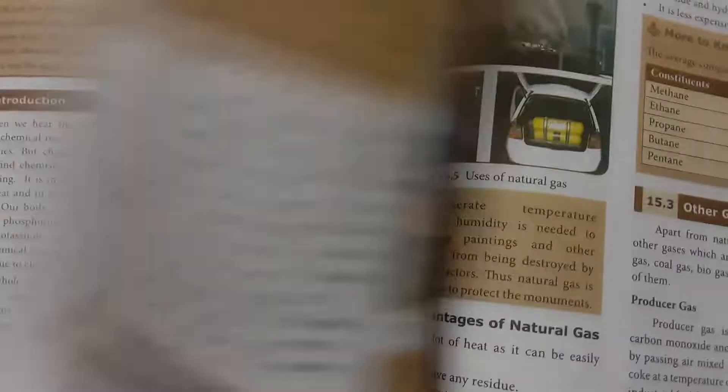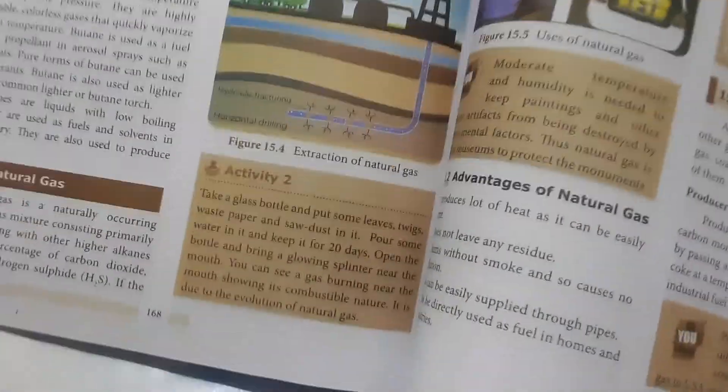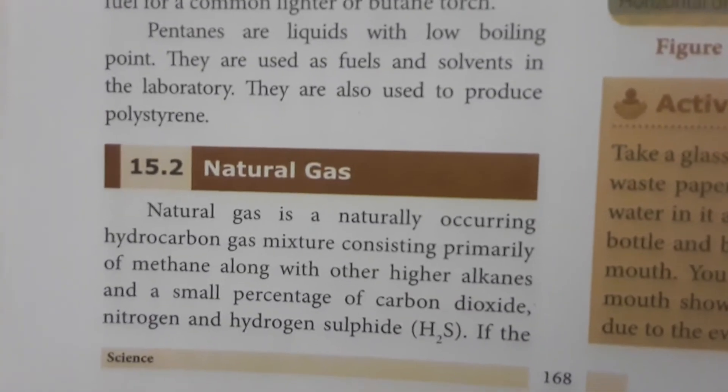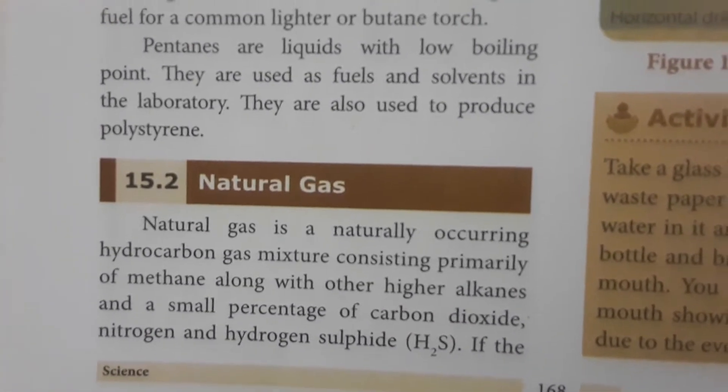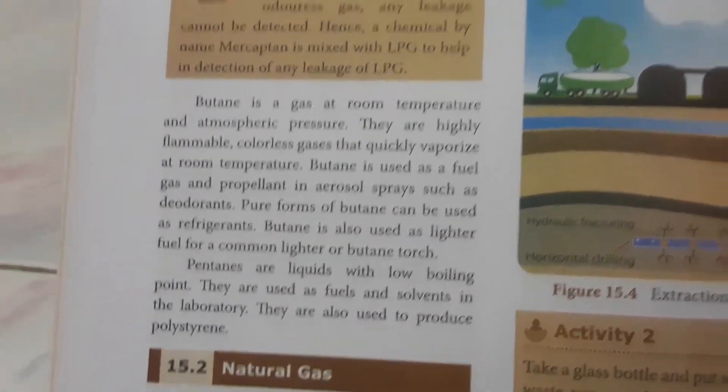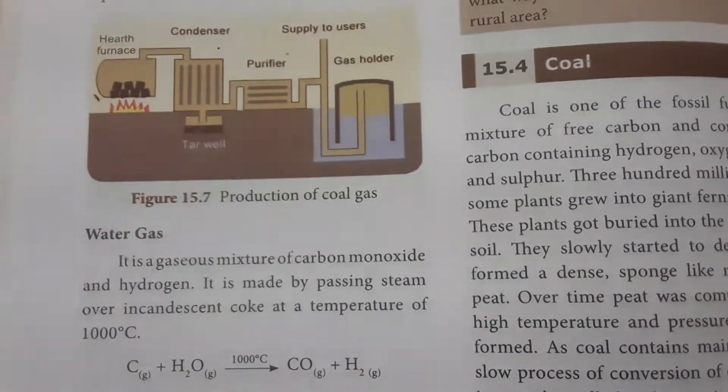Today we are going to see key points in this lesson. Natural gas is a naturally occurring hydrocarbon gas mixture containing gases like methane, ethane, and propane. Water gas and coal gas are also important types covered.